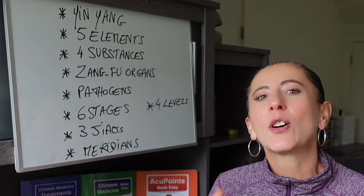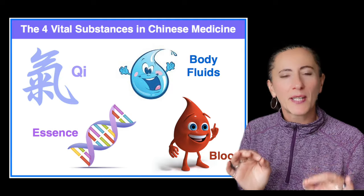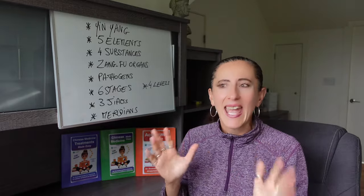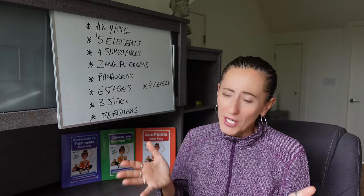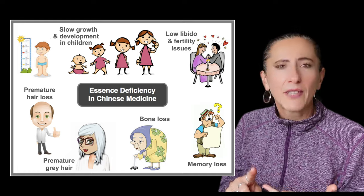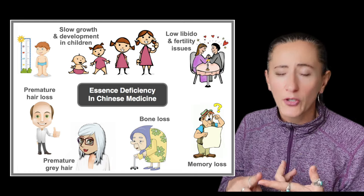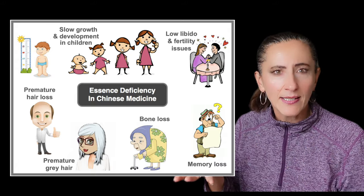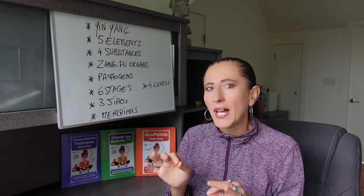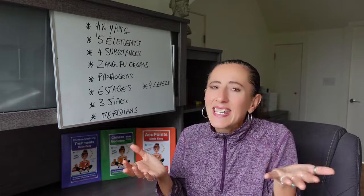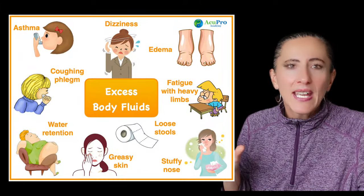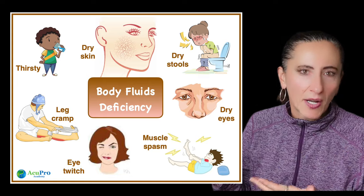The next step is to look at the four vital substances: qi, blood, body fluid, and essence. Starting with essence — we are either deficient or we're not. Deficiency signs include low libido, reproductive system issues, early grey hair, poor teeth, bone issues, and aging faster. Then body fluid can be excess or deficient. Excess is too much dampness; deficiency leads to dryness. If you see mucus and excess body fluid, it's excess dampness. If you see dryness, it's body fluid deficiency.